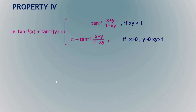The next property: tan⁻¹(x) + tan⁻¹(y) = tan⁻¹((x + y)/(1 − xy)), provided the product xy is less than 1. If the product xy is greater than 1 and both x and y are greater than 0, then you write it as π + tan⁻¹((x + y)/(1 − xy)).